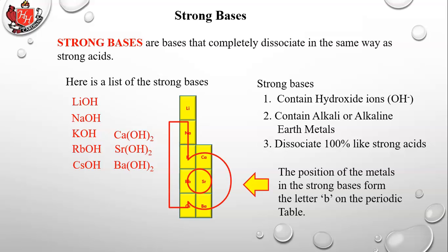The positions of those elements on the periodic table kind of form the letter B, so you can remember the strong bases that way. Just like strong acids, if you're seriously studying acids and bases you need to have these memorized. Any other base — such as ammonia — would be a weak base that only sometimes attracts or produces a hydronium ion.